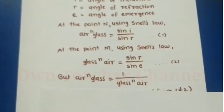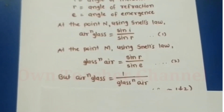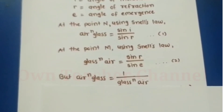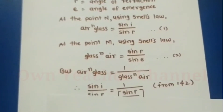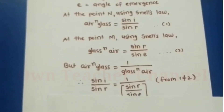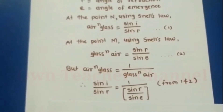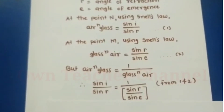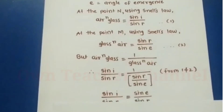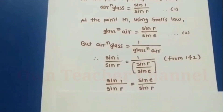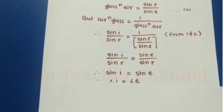Refractive index of glass with respect to air = 1 / (refractive index of air with respect to glass). So sin(i) / sin(r) = 1 / [sin(r) / sin(e)]. From equations 1 and 2: sin(i) / sin(r) = sin(e) / sin(r), which means sin(i) = sin(e), therefore i = e.